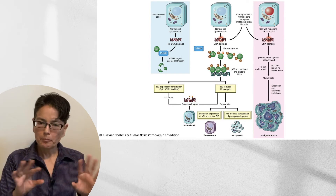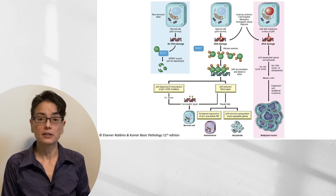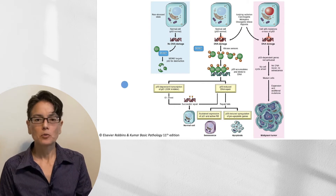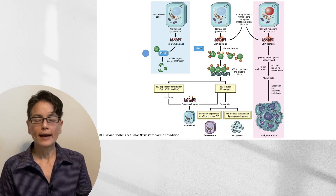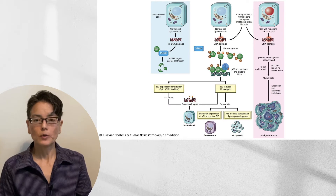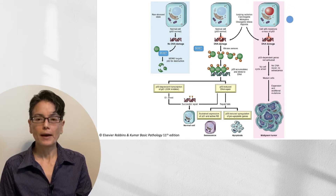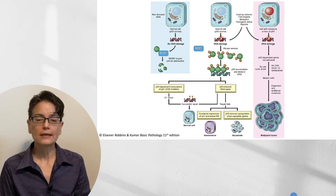This is a drawing from Robbins and Kumar Basic Pathology, 11th edition. While I'll go through each one individually, it's nice to look at them lined up side by side. On the left is a healthy cell with no DNA damage. In the middle, a healthy cell now has some DNA damage — it's going to move through to either successful DNA repair, senescence, or apoptosis. The third pathway is when you have DNA damage and something preventing adequate P53 function — and in this instance, you can drive on to malignancy.